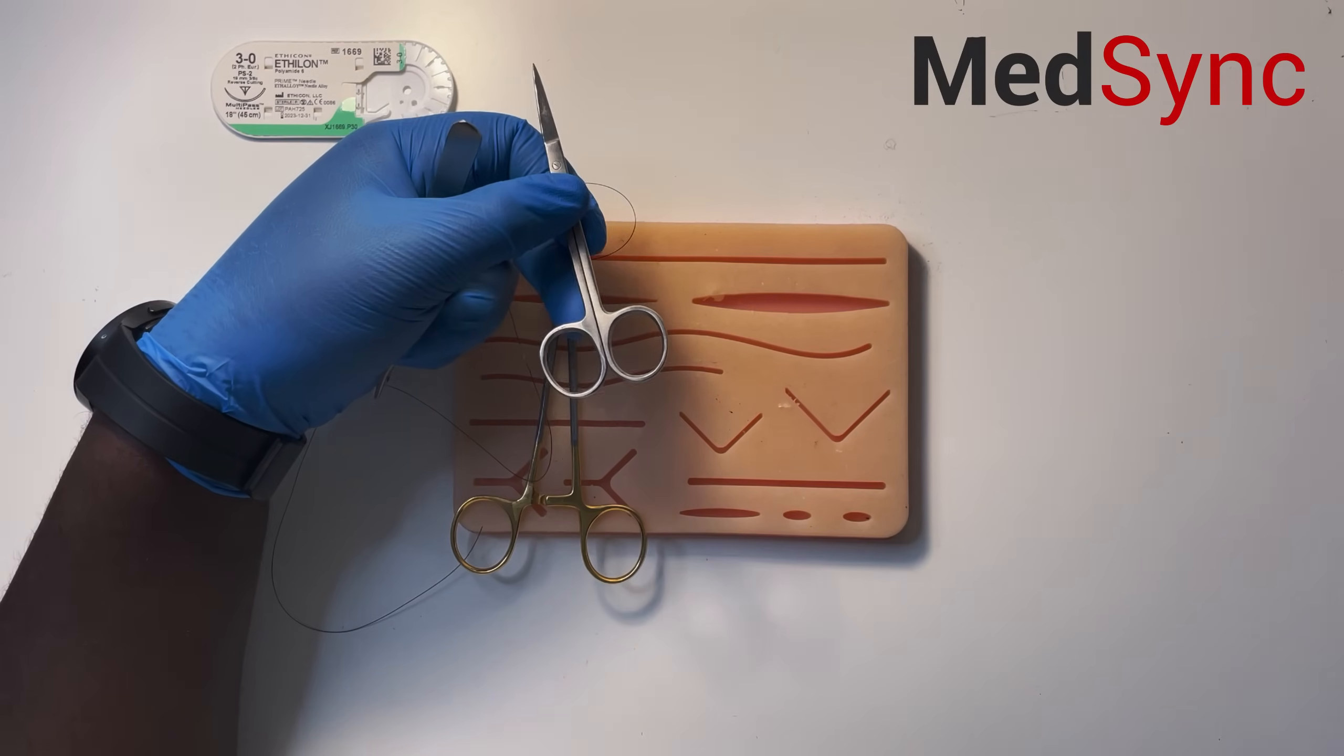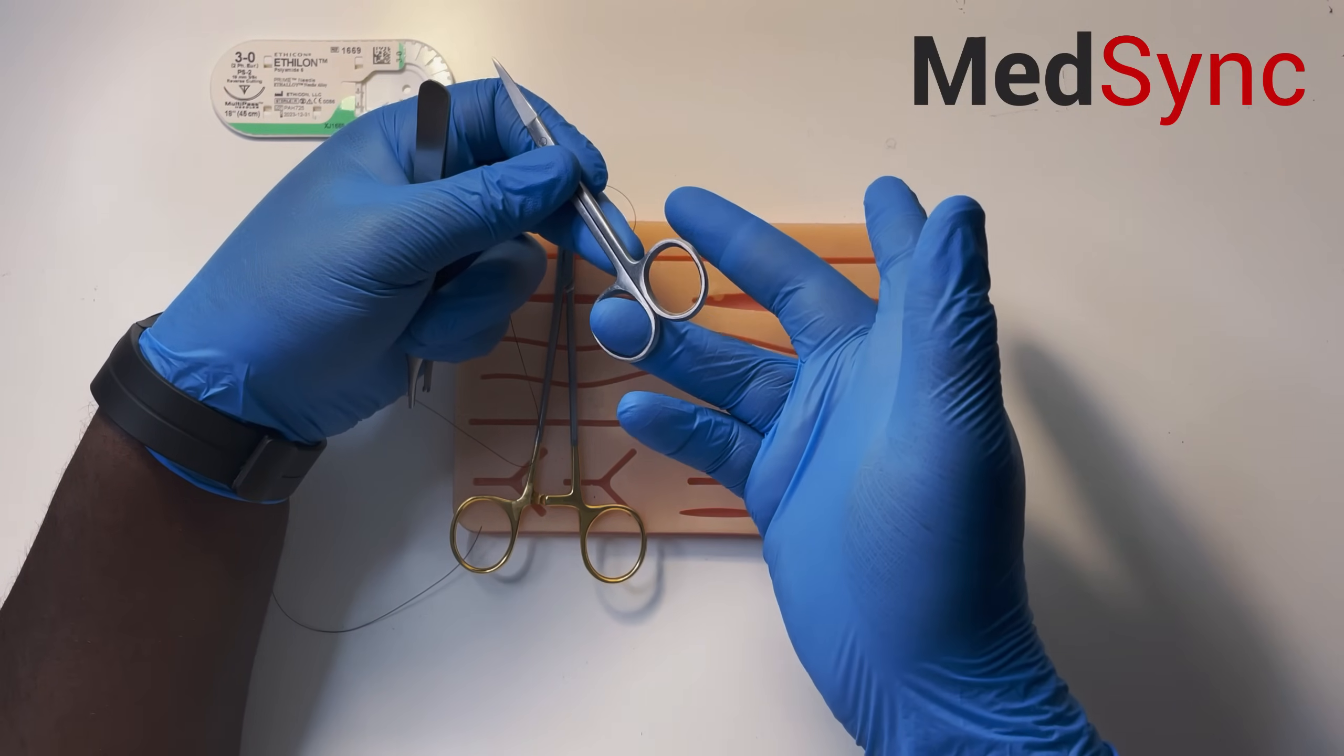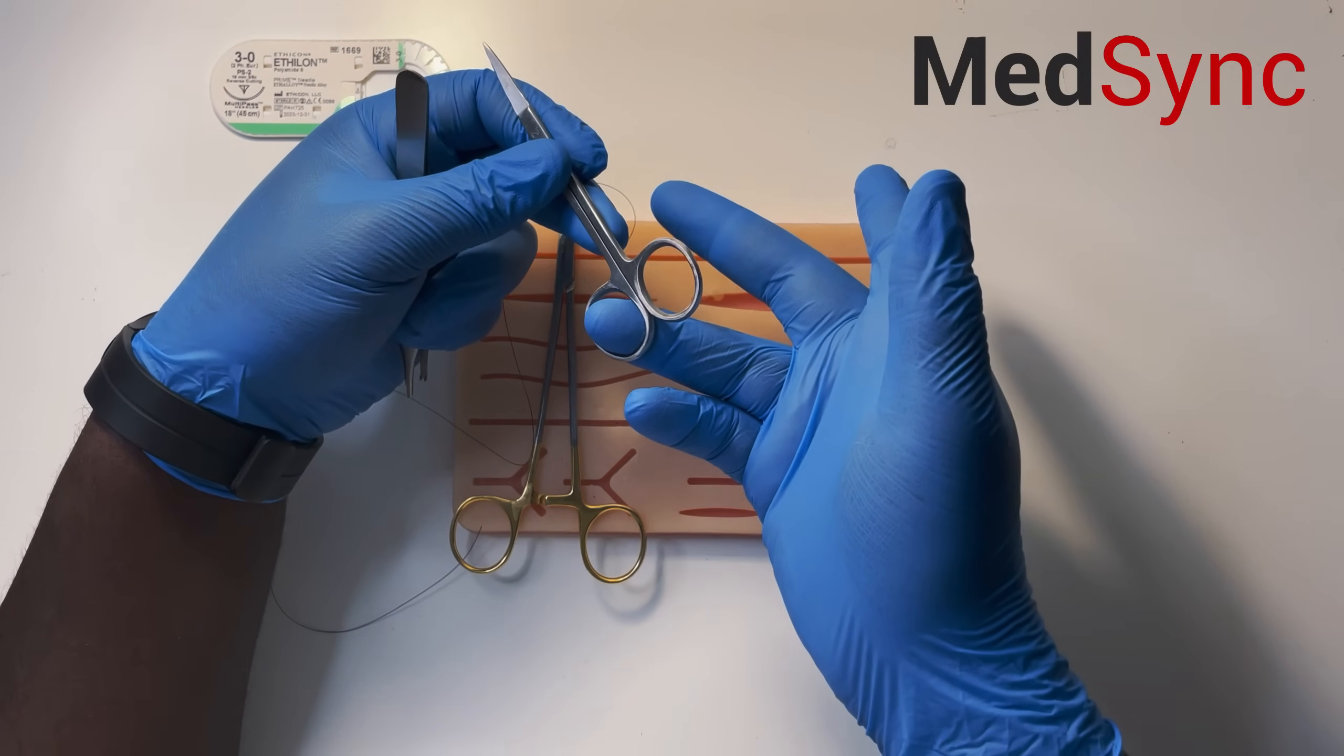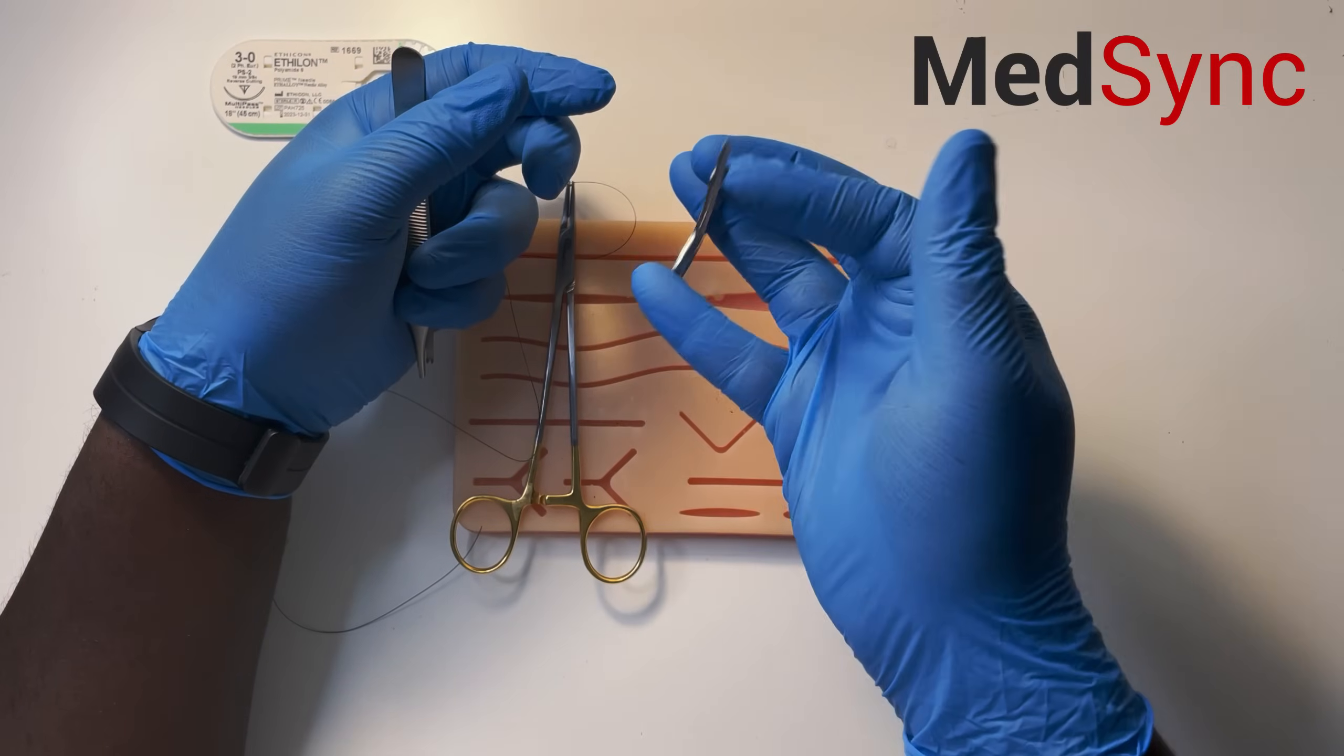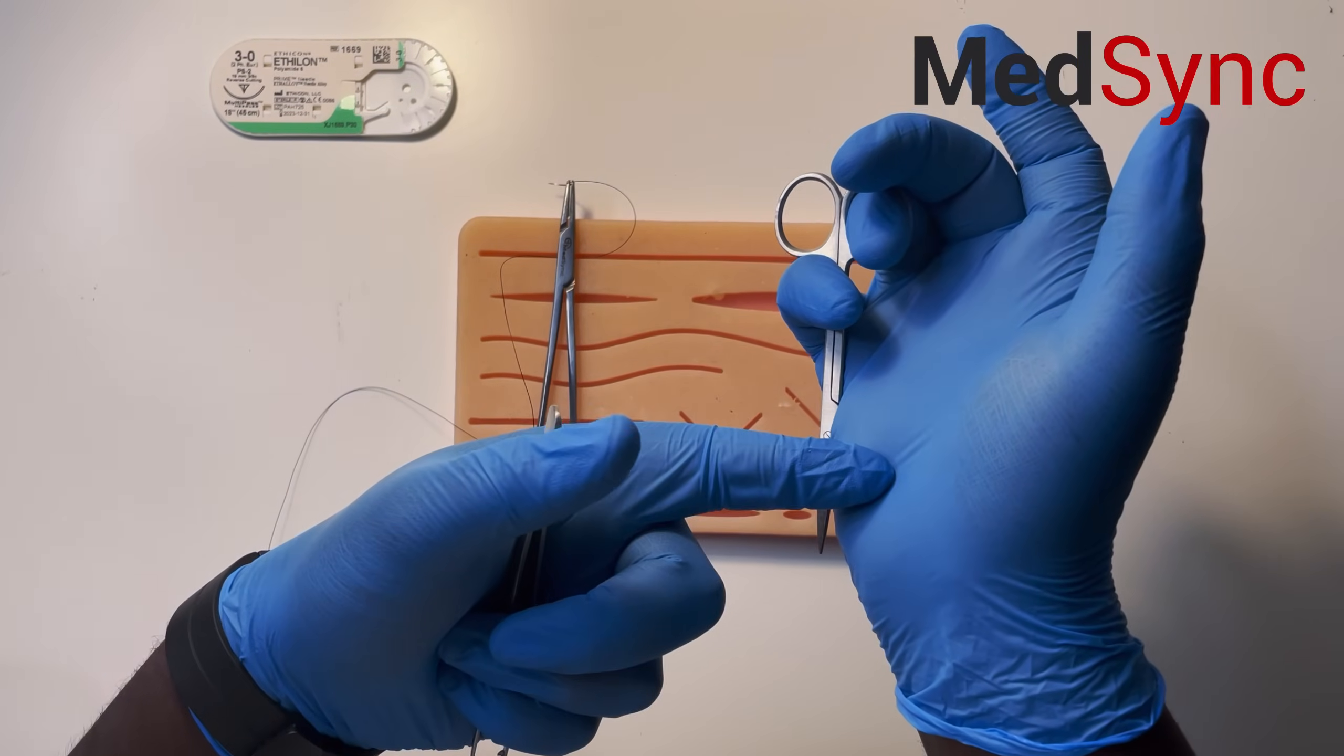When you've only got a basic suturing kit and you haven't got an assistant, you need to palm your scissors to cut quicker for yourself. Put your ring finger in and turn the scissor downwards towards your palm. Have it on the side so it doesn't go into your hand.